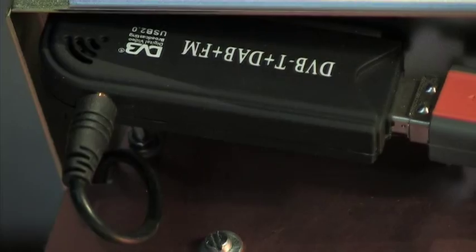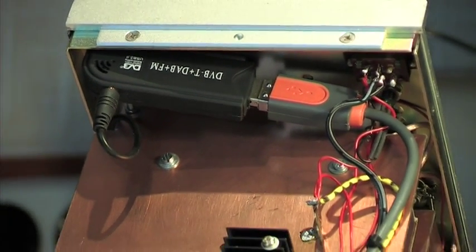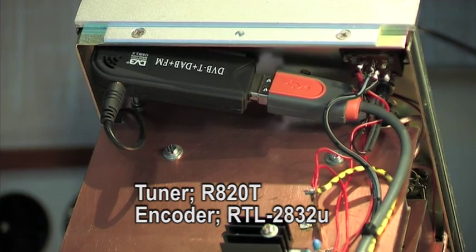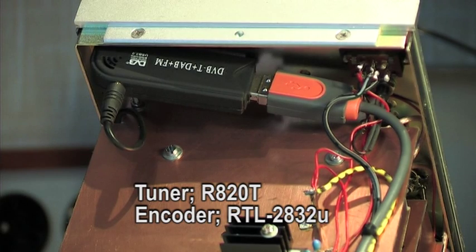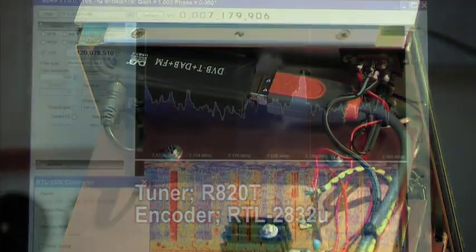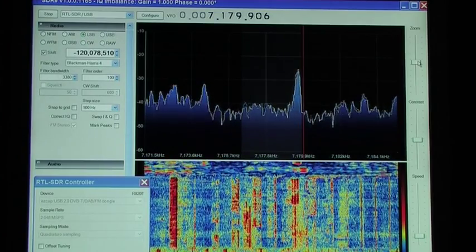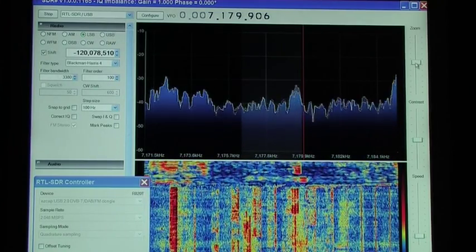The DVB stick is equipped with a tuner called RT820T and is usable from 17 megahertz until 1.5 gigahertz.